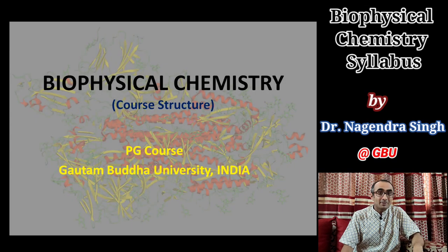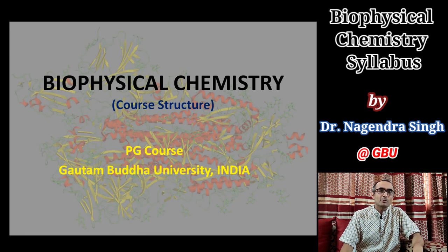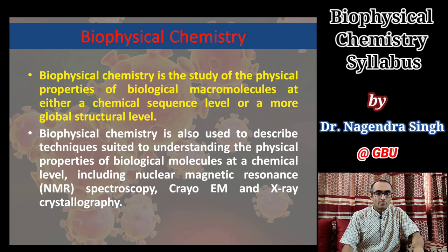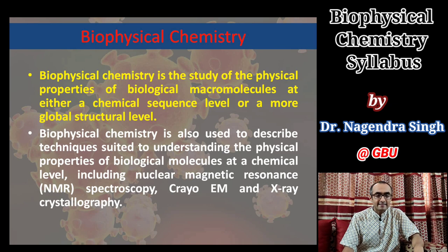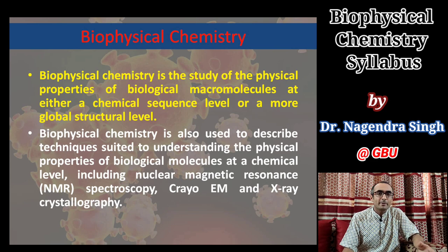Hello everyone. In this semester, one of the courses I'll be taking is biophysical chemistry. In today's lecture, we'll discuss the course structure and content. Biophysical chemistry is basically the study of physical properties of biological macromolecules at either a chemical sequence level or a more global structural level. There are four major biomacromolecules: proteins, carbohydrates, lipids, and nucleic acids.